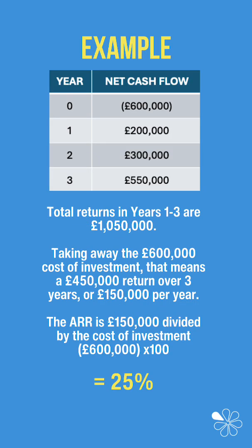In the example shown in the table, the total returns in years 1, 2, and 3 add up to £1,050,000. But then we have to deduct the £600,000 cost of investment.